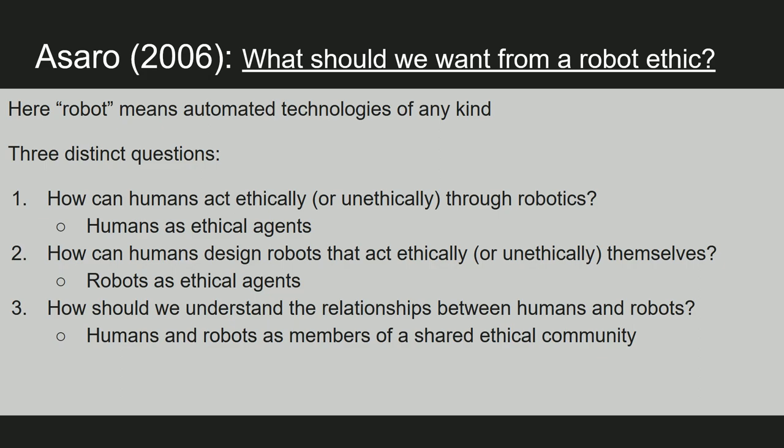Peter Saro tries to ground this discussion in more realistic issues. He distinguishes in this paper between three distinct questions. The first is how can humans act ethically or unethically through robots. Here the emphasis is on the human as the ethical agent, and the robot as an instrument or medium through which humans act. In this sense, the standard ethical analysis from an engineering ethics class might apply.